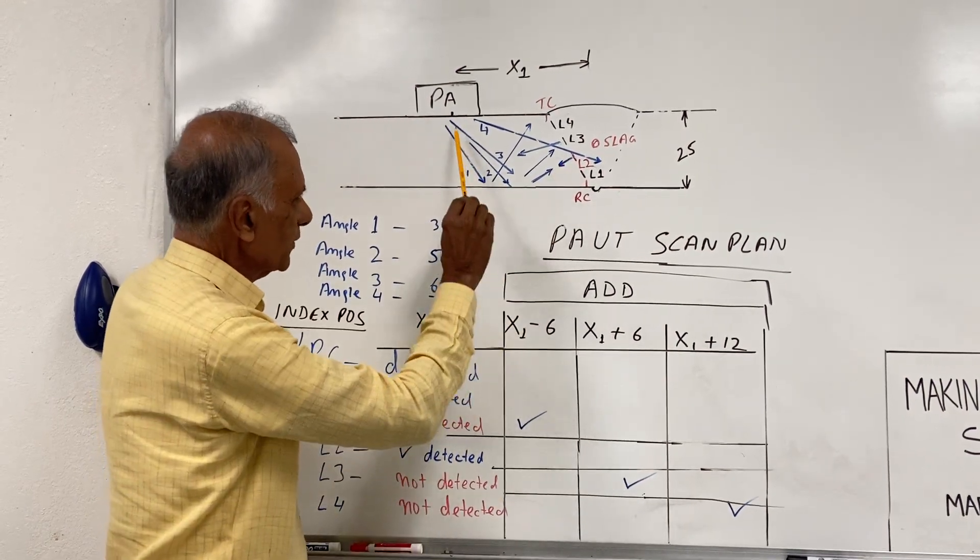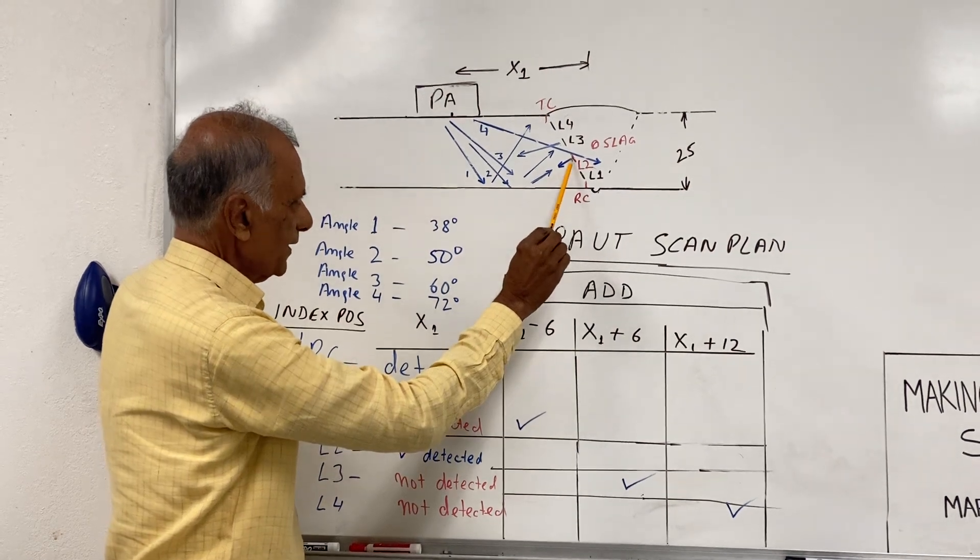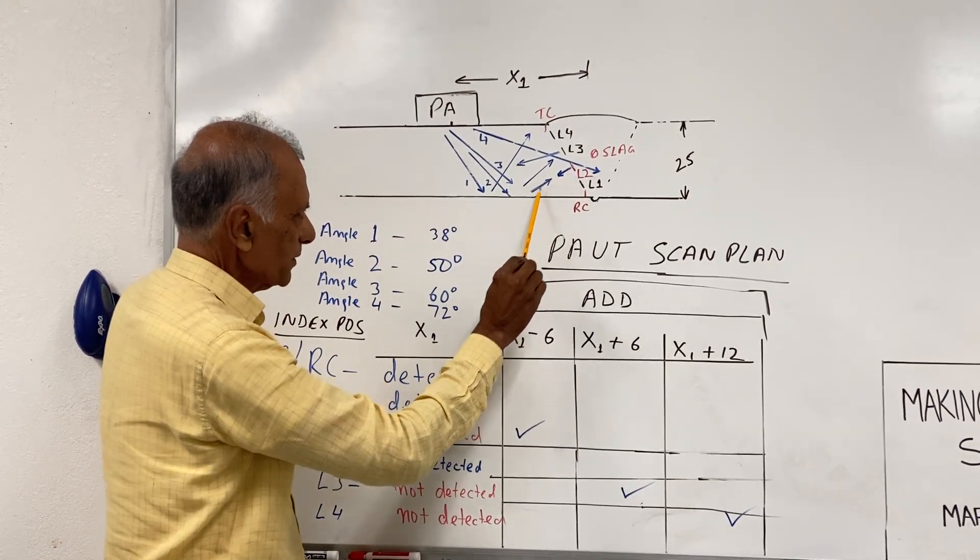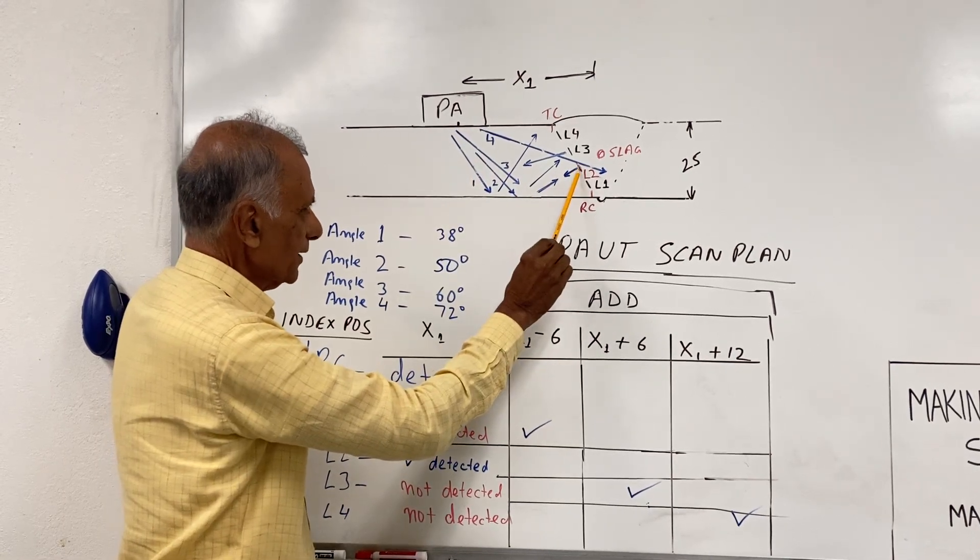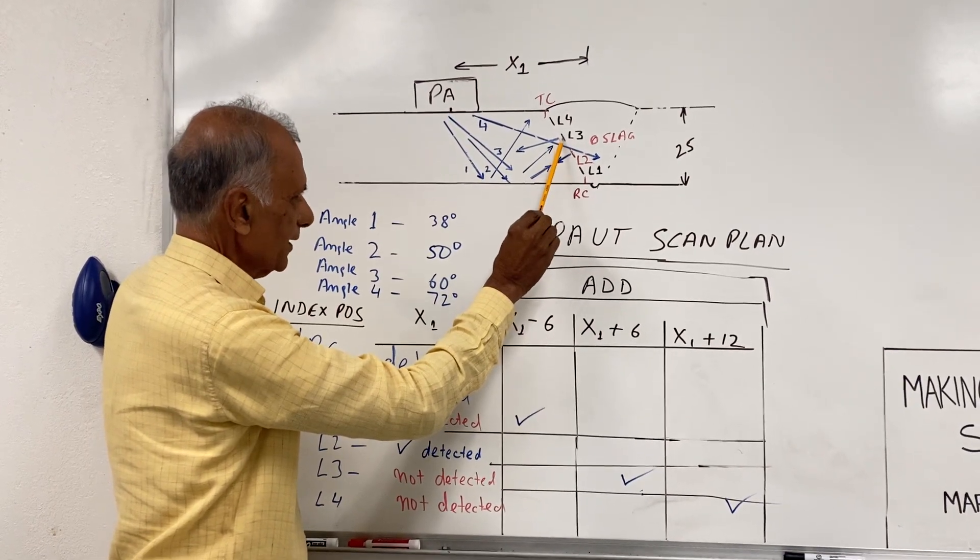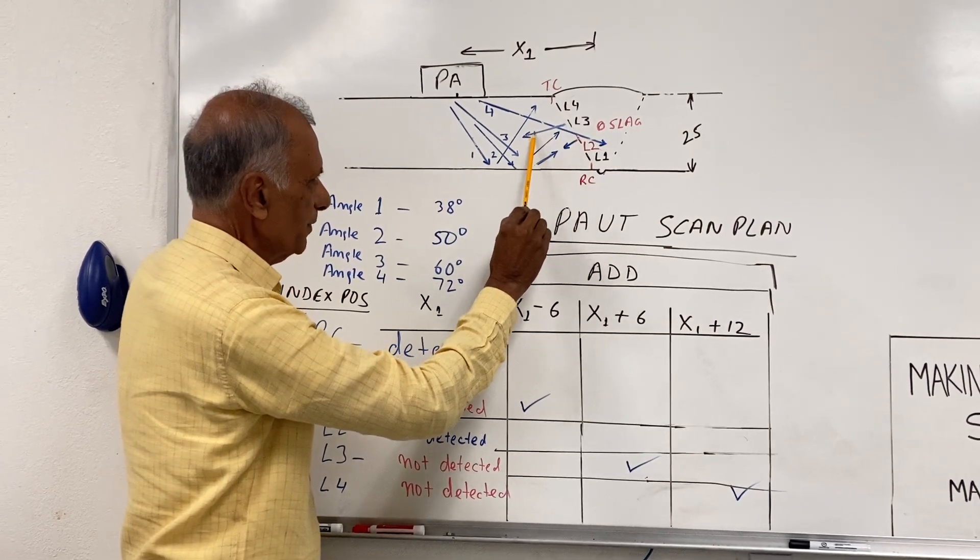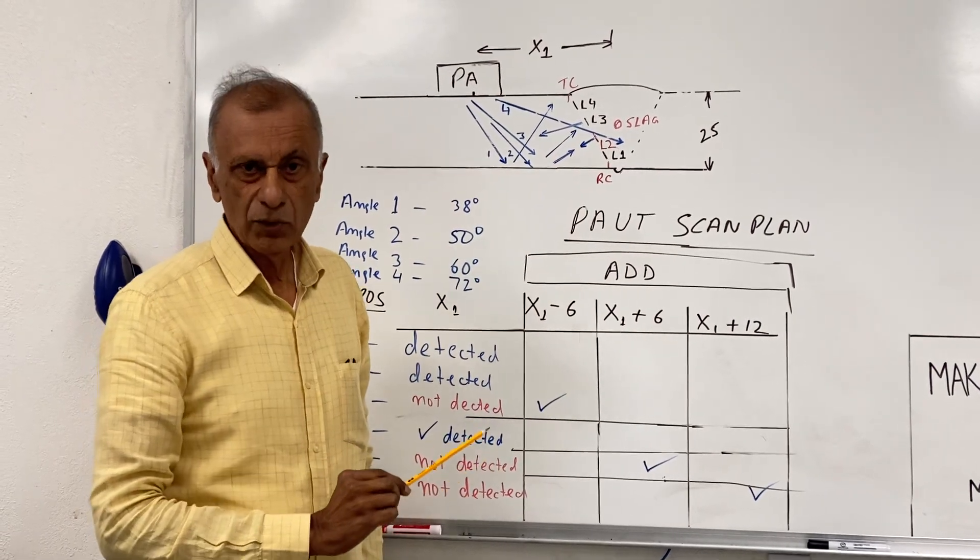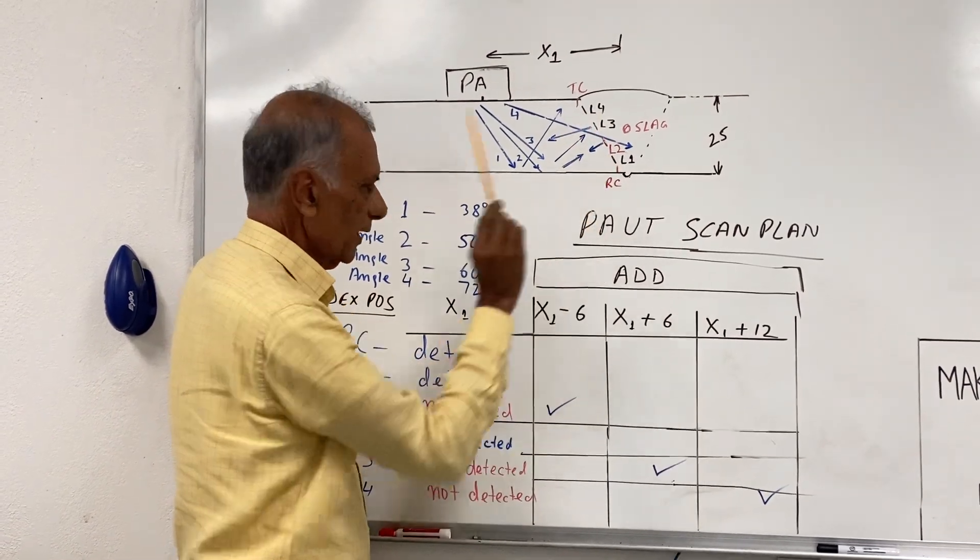Unlike L2, where the sound is going here, it goes here, it's 90 degrees to the lack of fusion, it comes back on the same path and goes back to the probe. So L2 is detected, L3 is not detected, because the incident beam is here, the reflected beam is right here, so it doesn't go back to the probe. And the same happens with L4 and L1.